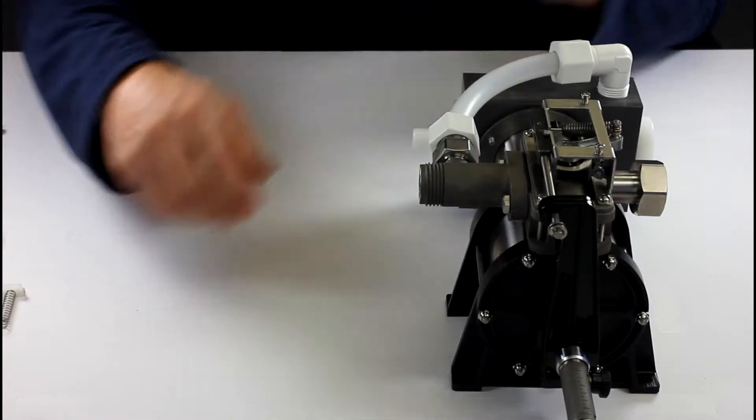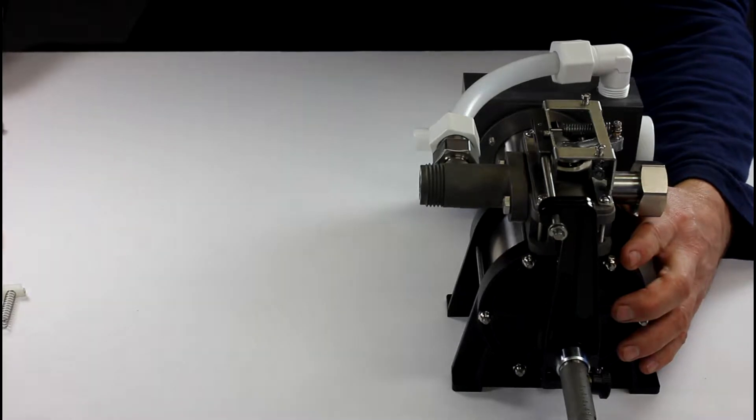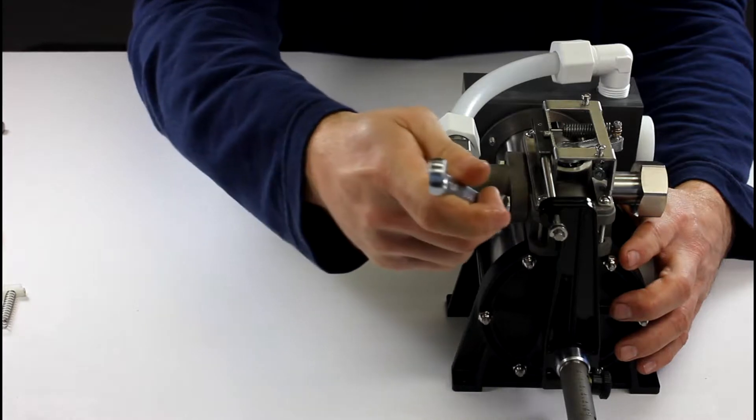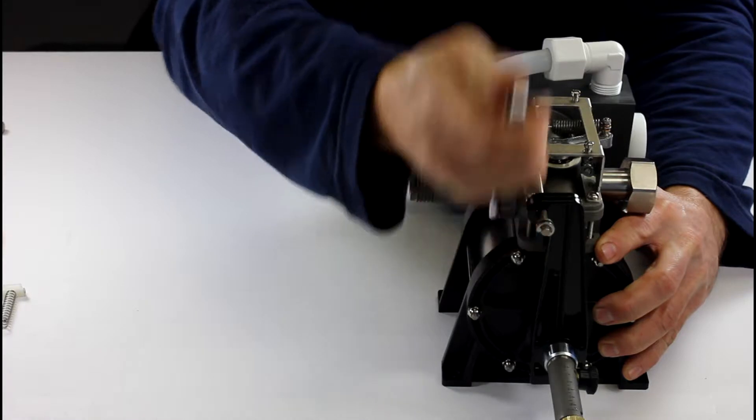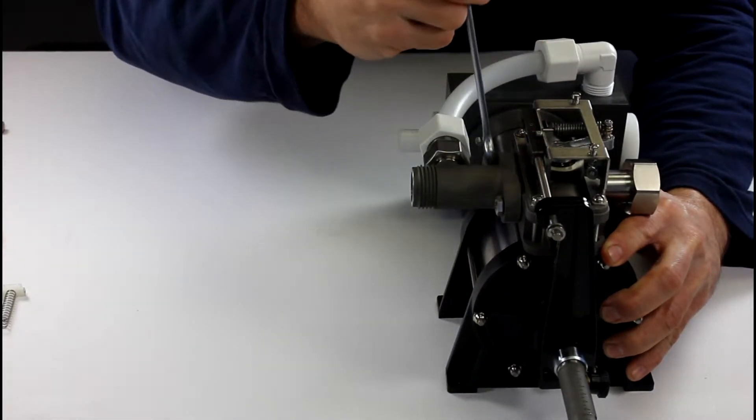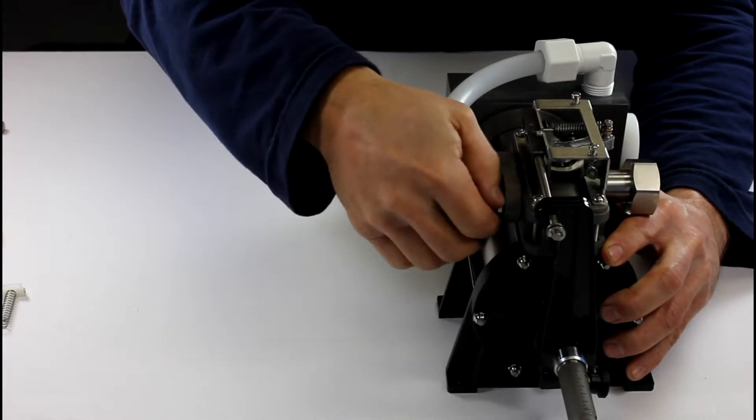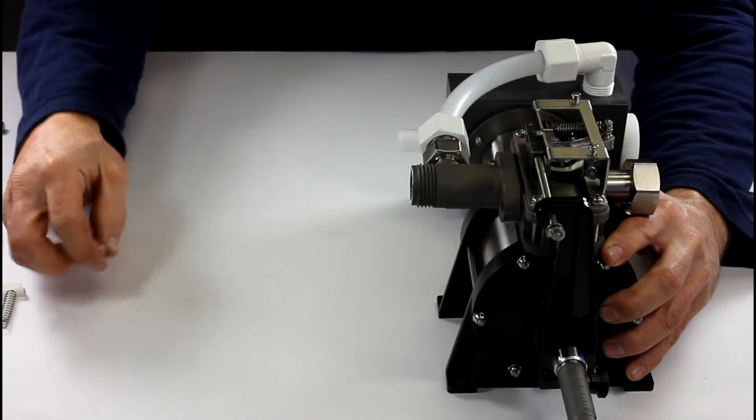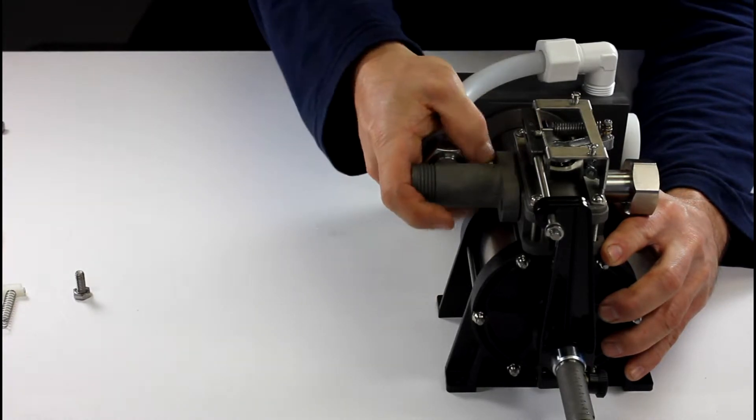Now we're going to remove this outlet fitting off of the valve block. These quarter inch bolts, we're just going to take a seven sixteenths wrench and loosen them. They're snug, turn them back.